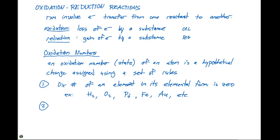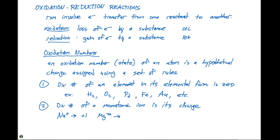Rule number two: the oxidation number of a monatomic ion is its charge. For example, Na⁺ has an oxidation number of +1, Mg²⁺ has an oxidation number of +2, Cl⁻ has an oxidation state of −1, and S²⁻ has an oxidation state of −2. Looking at the periodic table, group 1A and group 2A elements have +1 or +2 charges, whereas groups 6A and 7A have oxidation states of −2 and −1 respectively.